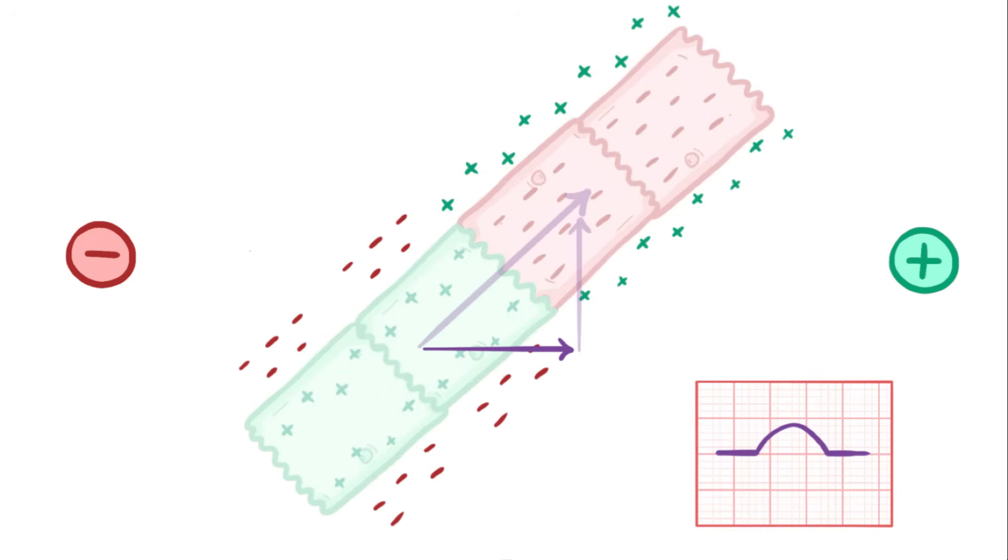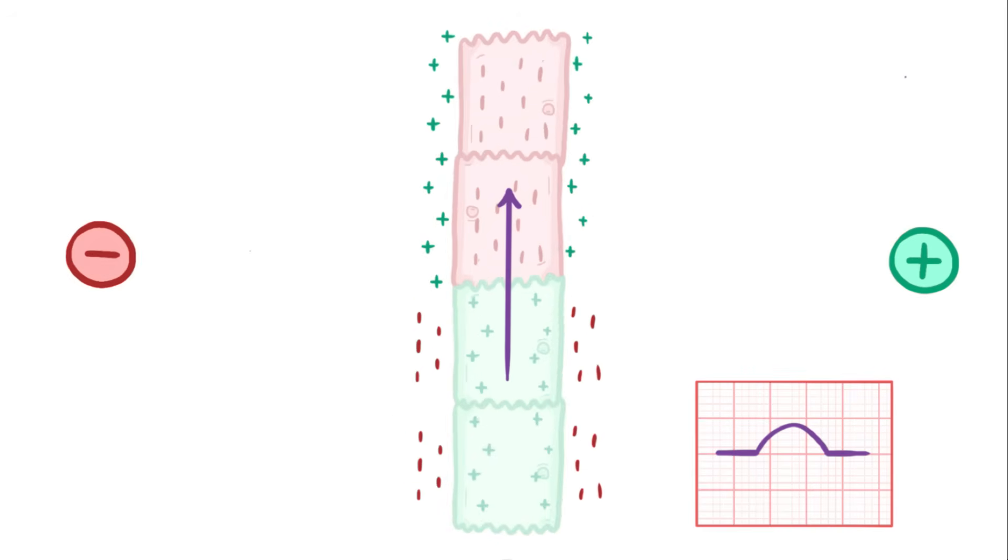In other words, the size of the deflection on the ECG tracing always corresponds to the magnitude or size of the dipole in the direction of the electrode. The perpendicular component isn't pointing at the electrode, so it doesn't cause any deflection. In fact, if there's a depolarization wave that goes straight up, which is perpendicular to the positive and negative electrodes, then there'd be no deflection at all.